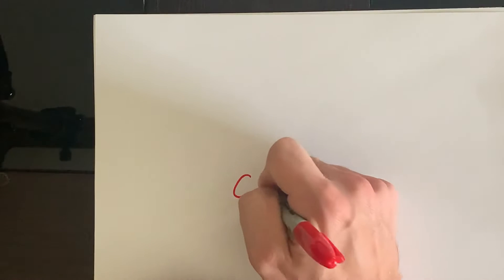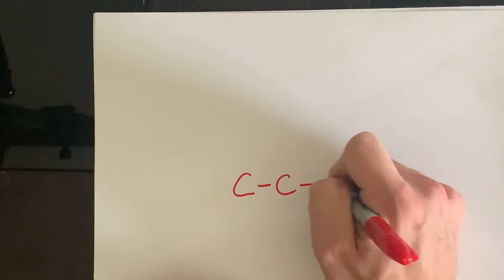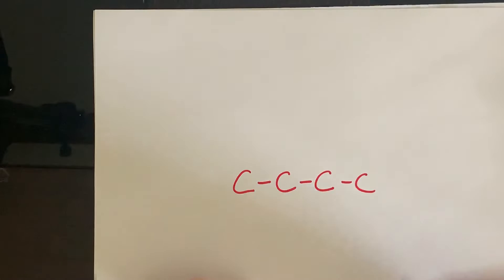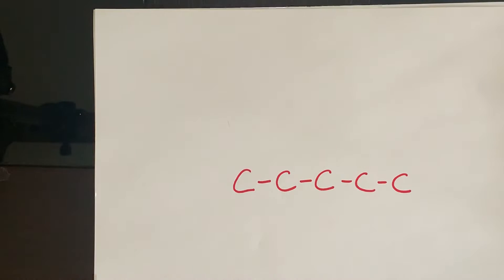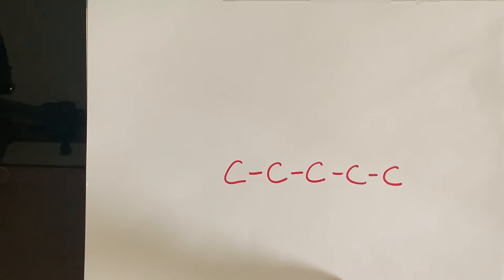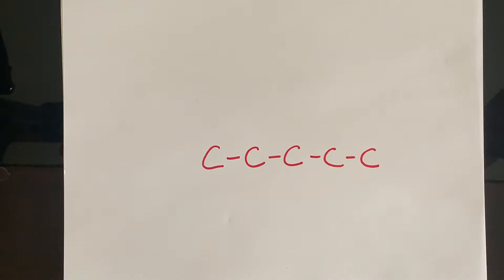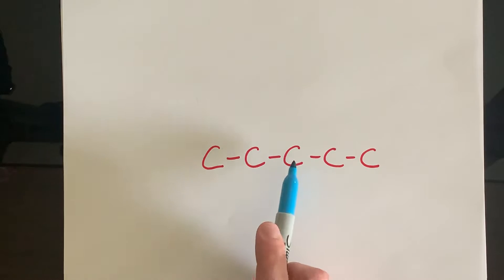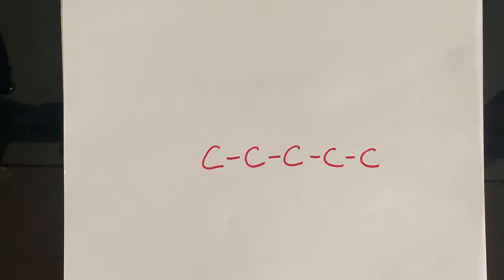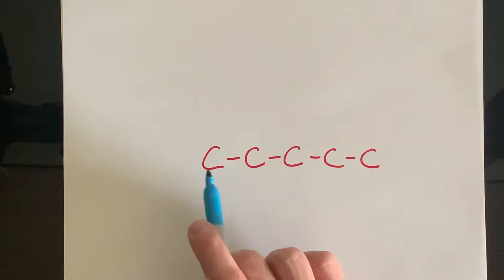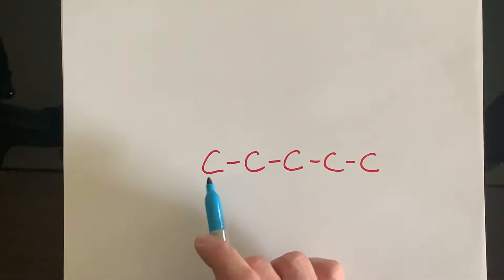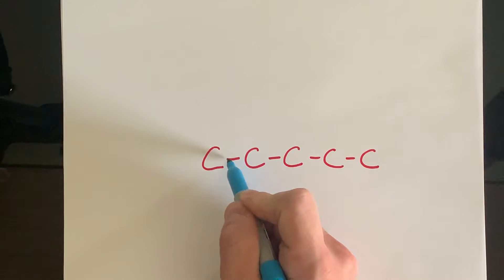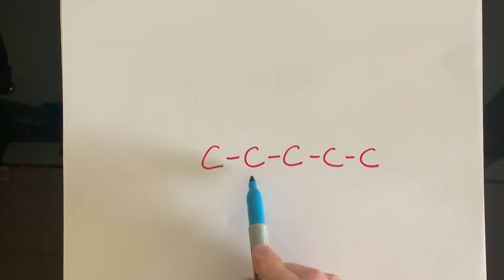I'll do an easy one to start off. In this chain right here, we have a straight chain and it has five carbons in it. So if we wanted to attach our hydrogens, here's our first carbon: carbon one, carbon two, carbon three, carbon four, and then carbon five. If we're looking at carbon number one, you can see that it has one bond and that one bond is attached to carbon number two.